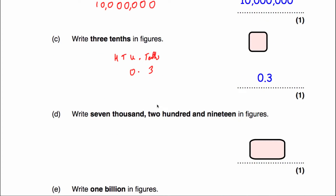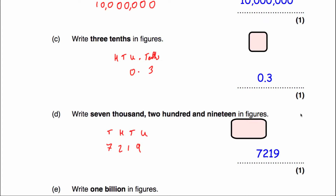Question D says to write the number 7,219 in figures. Let's do our place value: thousands, hundreds, tens and units or ones. We've been asked to write 7,219, so we would just write down 7,219.